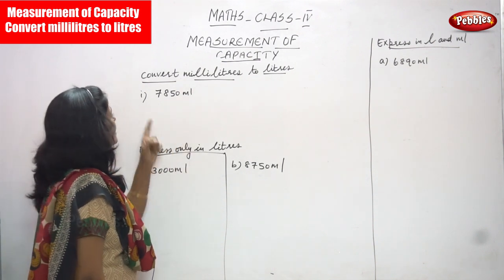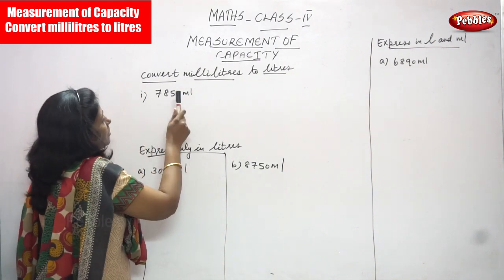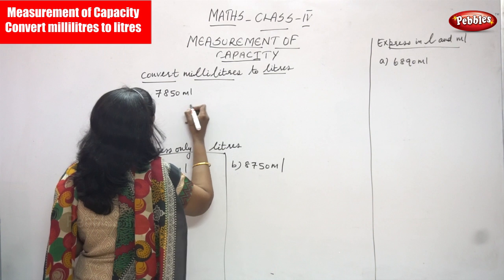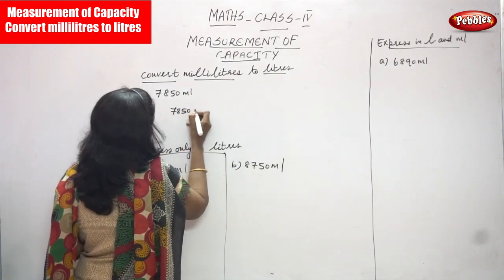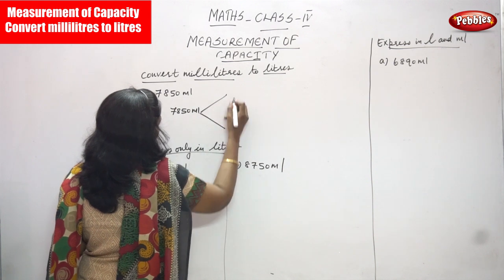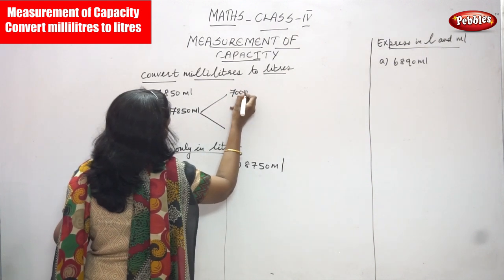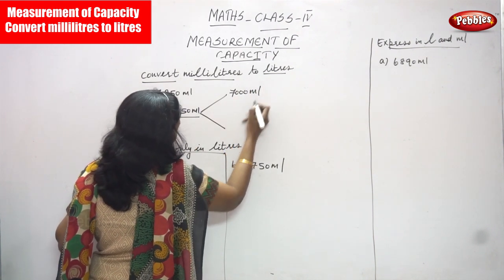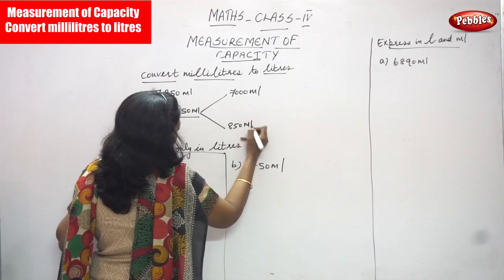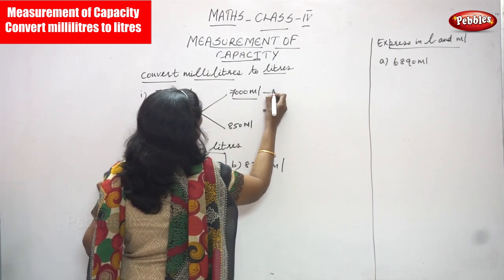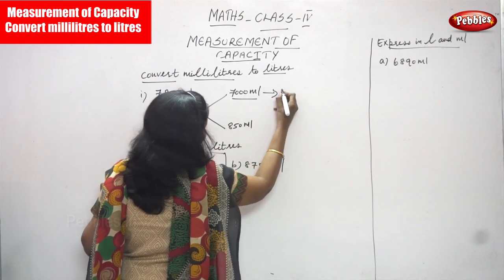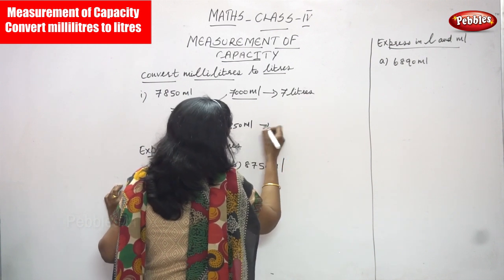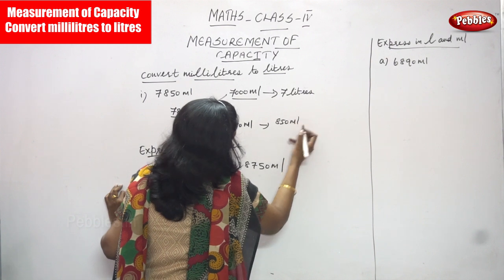Convert milliliters to liters: 7850 ml. First, you have to separate it — that is 7000 ml and 850 ml. This 7000 ml is converted into liters, which means seven liters.